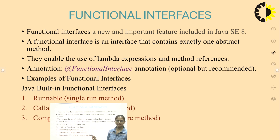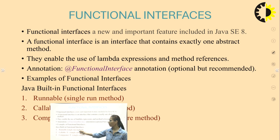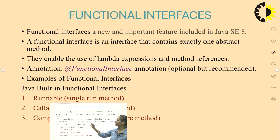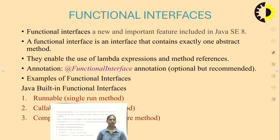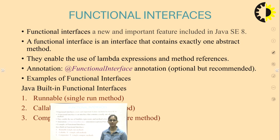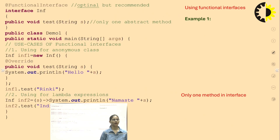Runnable consists of a single abstract method: run. Callable consists of a single method: call. Comparator consists of a single method: compare. With the help of the @FunctionalInterface annotation, you restrict your interface so that if you declare more than one abstract method, the compiler will throw an error.